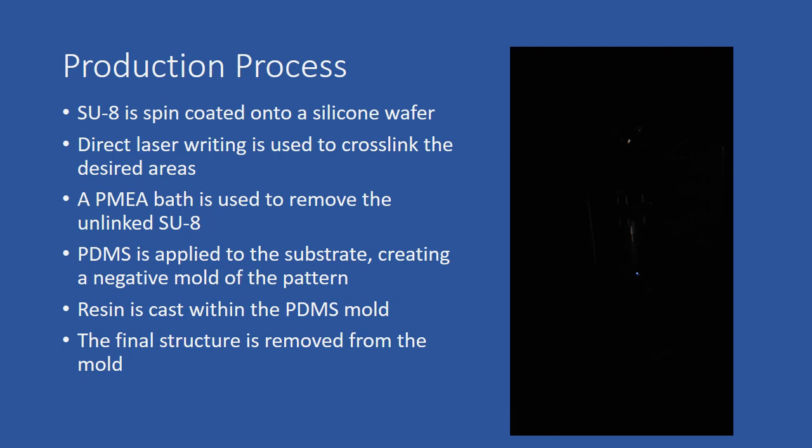PDMS is then applied to the substrate, creating a negative mold of the pattern that was written in the previous step. Resin is cast within the PDMS mold and is removed from the mold to create the final structure.